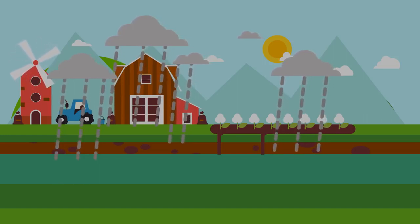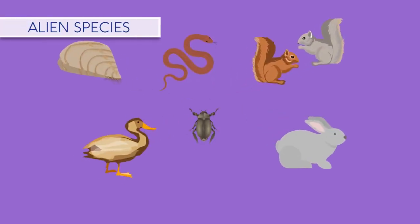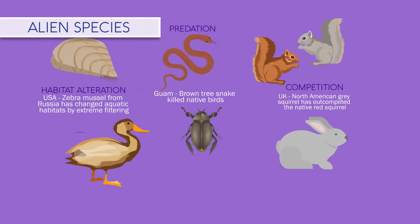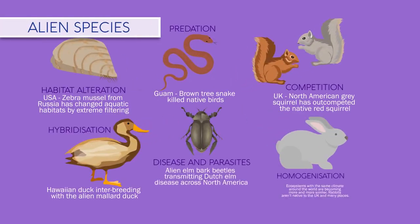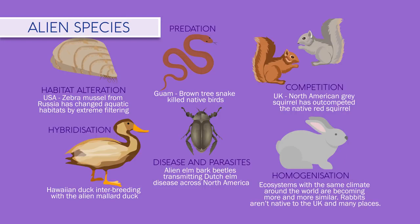A huge impact humans have had on planet Earth is the introduction of alien species to habitats. It is estimated that on any given day there are 3,000 species in transit aboard ocean-going vessels. Alien species can cause problems in a number of ways.